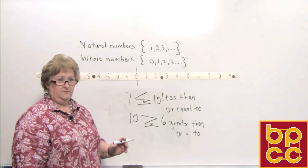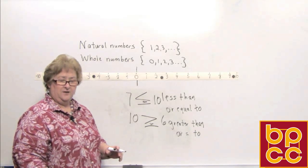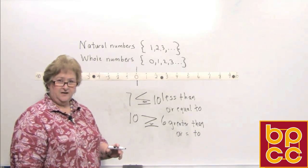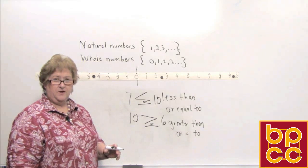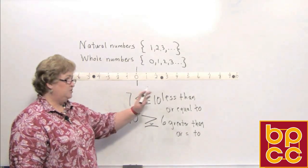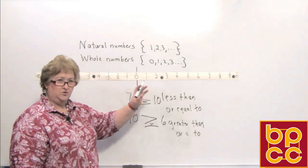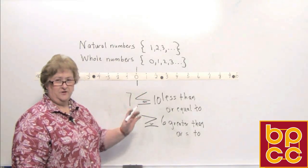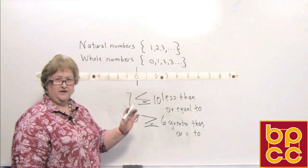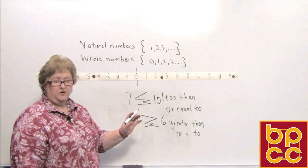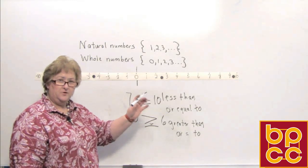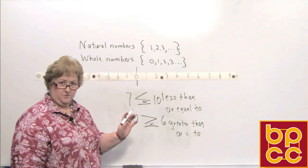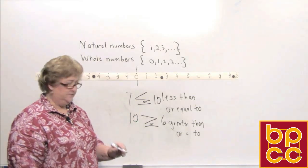As long as we're dealing with positive numbers, the number to the right on the number line is always bigger. As we get into positive and negative numbers, that's going to become important. Anytime you're checking which one is larger or smaller, the number to the right is always larger, and the number to the left is always the smaller number.